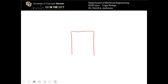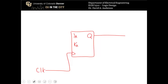Drawing the state machine circuit: it's very simple. We have a single flip-flop with inputs J_A and K_A plus a clock, and the output Q corresponds to state A. The input to J_A is X, and the input to K_A is 1. You can either write a 1 directly, or in some problems you'll use X or X-prime to obtain 1.